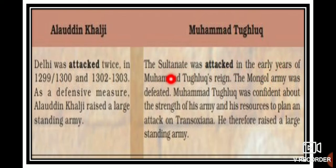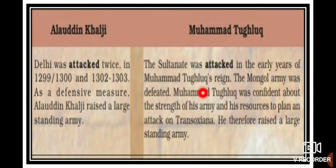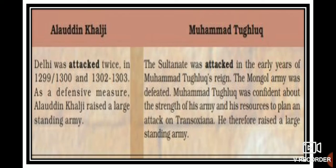During Muhammad Tughlaq's reign, the Sultanate was attacked in his early reign. The Mongol army was defeated. Muhammad Tughlaq was very confident about the strength of his army and his resources to plan an attack on Transoxenia, and therefore raised a huge standing army. So Alauddin Khilji always had a defensive measure to protect his country, whereas Muhammad Tughlaq started thinking about how he could attack his enemies.